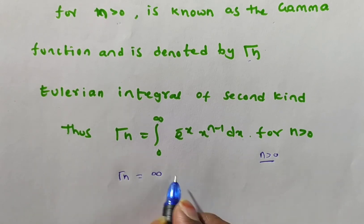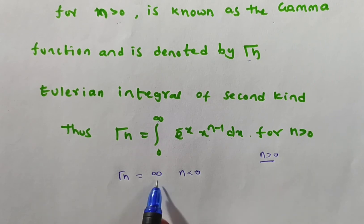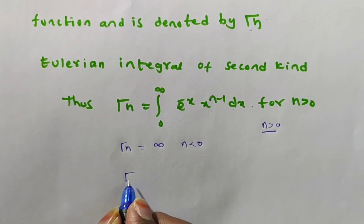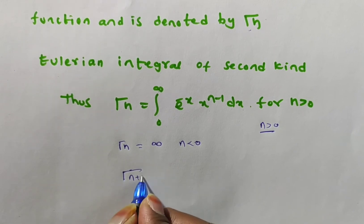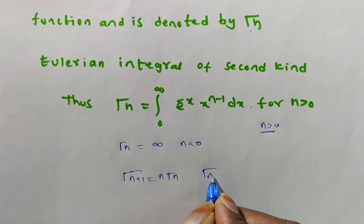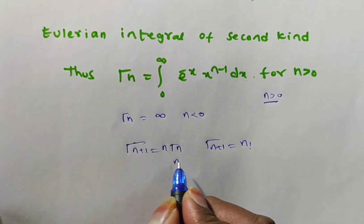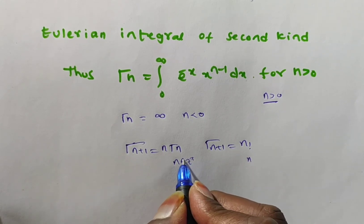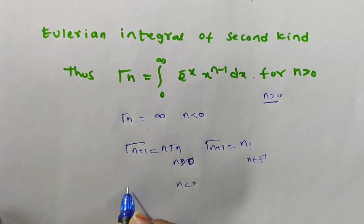For n less than 0 — such as Gamma(0), Gamma(-1), Gamma(-2) — the Gamma function value is infinite. Next, we will discuss some problems and proofs, and the relation between Beta and Gamma. Key properties include: Gamma(n+1) = n * Gamma(n), and Gamma(n+1) = n factorial for n belonging to the positive integers. For n > 0 simply, and for n belonging to Z+, if n is less than 0, we use the formula Gamma(n) = Gamma(n+1) / n.